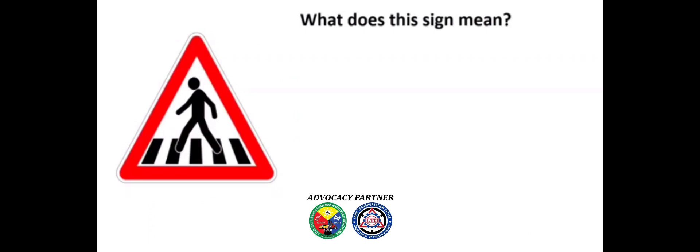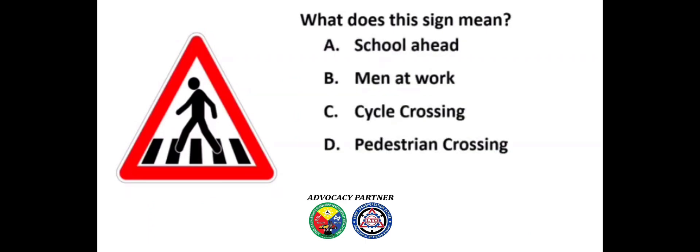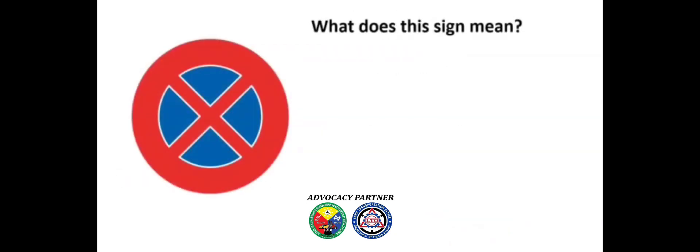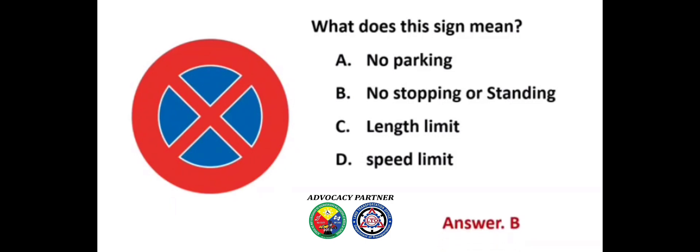What does this sign mean? A) School ahead, B) Men at work, C) Cycle crossing, D) Pedestrian crossing. Answer: D) Pedestrian crossing. What does this sign mean? A) No parking, B) No stopping or standing, C) Length limit, D) Speed limit. Answer: B) No stopping or standing.